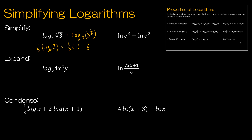Second question — I chose to use the quotient property because there's a subtraction. I can write this as natural log of e to the sixth divided by e squared, which reduces to natural log of e to the fourth. Now I use the power property to rewrite that as 4 times the natural log of e. The natural log of e asks e to what power is e, and that is one. So the answer is 4 times 1, which is 4. Alternatively, writing it as 6 times the natural log of e minus 2 times the natural log of e gives 6 times 1 minus 2 times 1, which still gives 4.